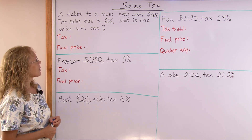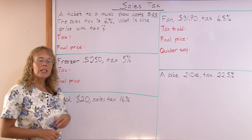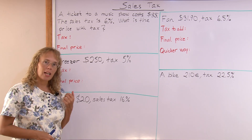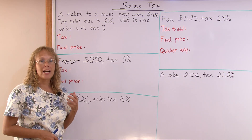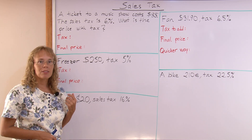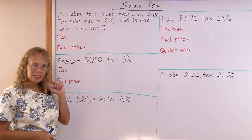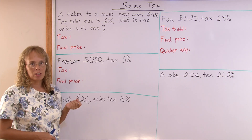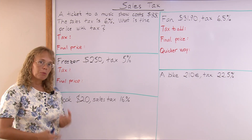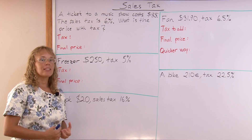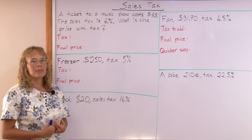The price with tax. We will first calculate the tax itself, which will be 6% of $35, and then we will add that to the price.